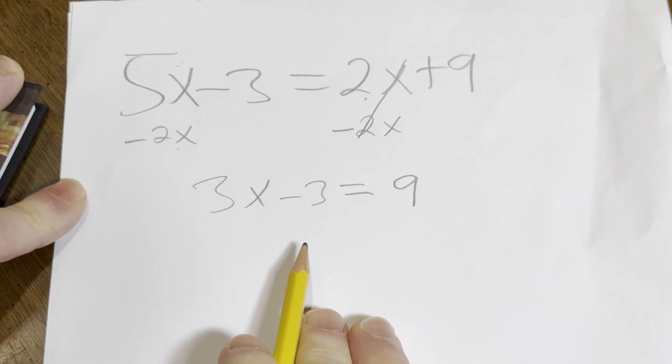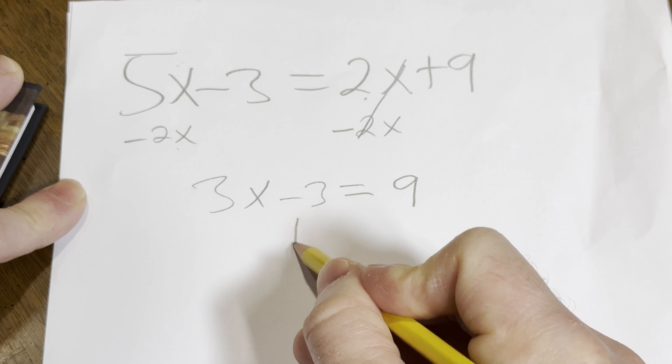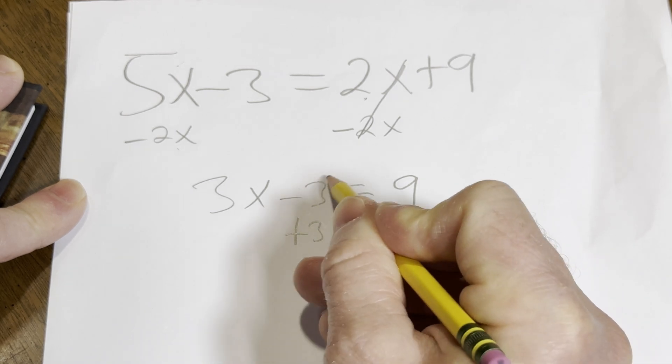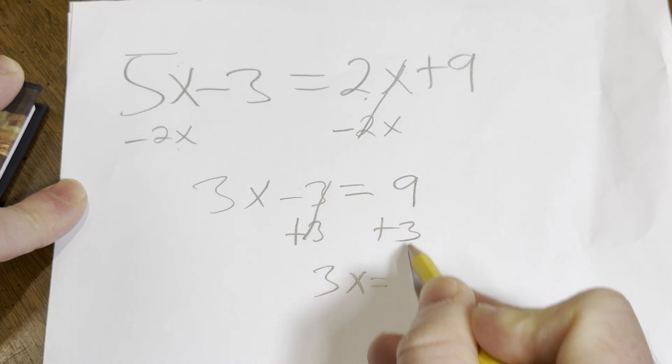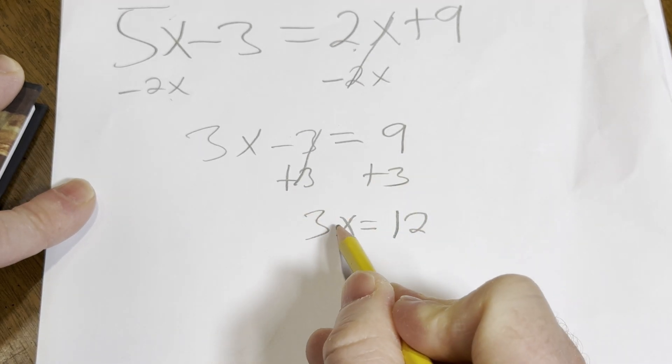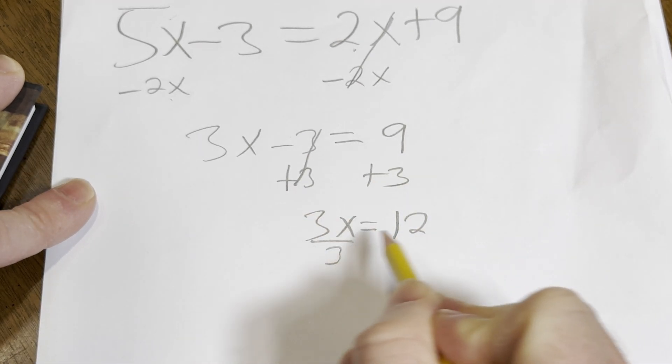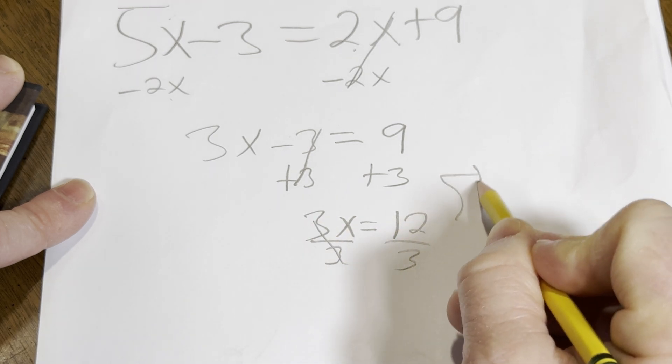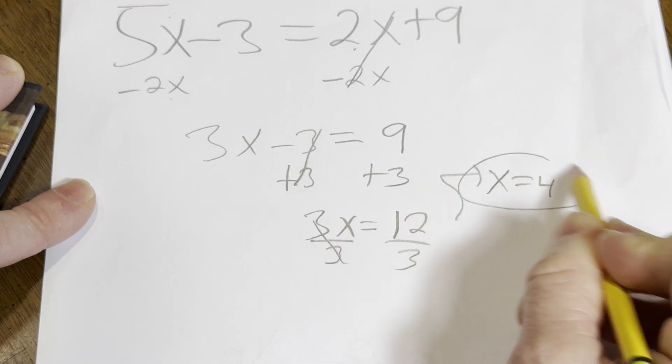So now we have to get rid of the minus 3. We can do that by adding 3 to both sides. So we get 3x equals, well, 9 plus 3 is 12. And then to finish solving for x, because it's being multiplied by 3, we just divide by 3. And so we get x equals 4. And that should be the final answer.